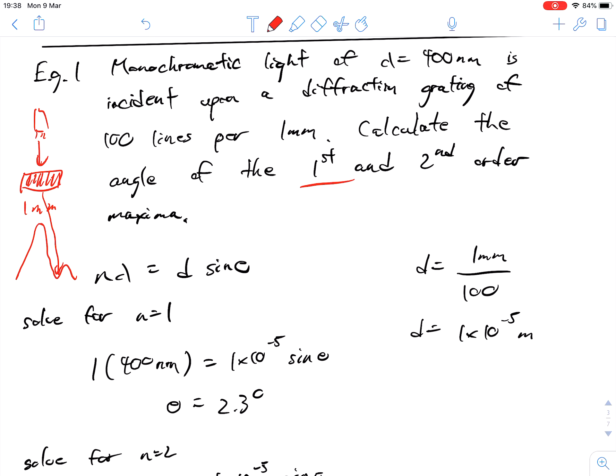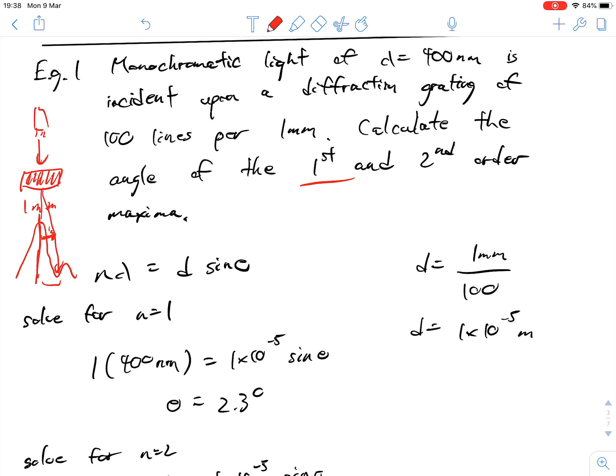Calculate the angle of the first and second order maxima. What's actually happening here is there's this diffraction pattern. There is our first order maxima there, the first point of destructive interference. We're measuring from here, that angle right here going out.